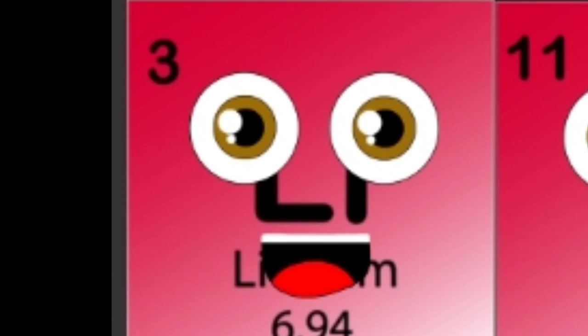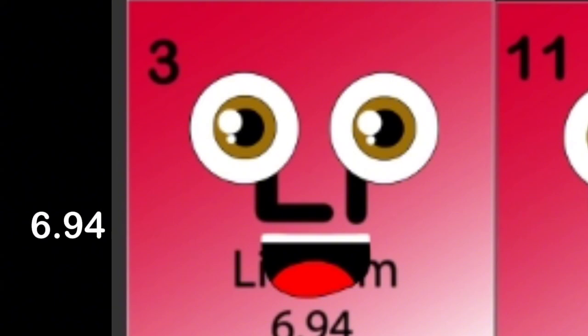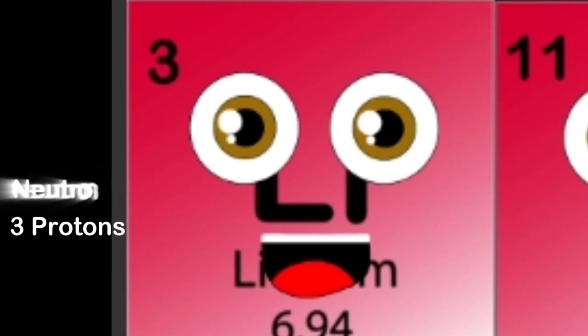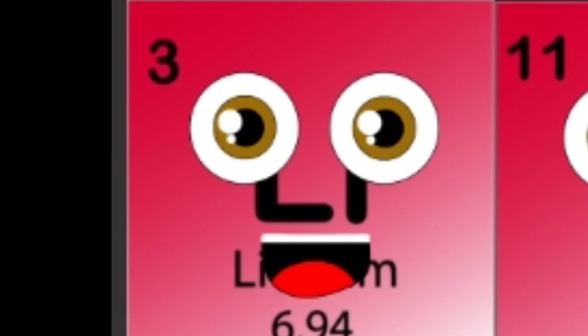I am a lithium atom, here's my element square. The alkali metals group is where it came from. My atomic mass is 6.94 because I have three protons and my neutron count is about four.